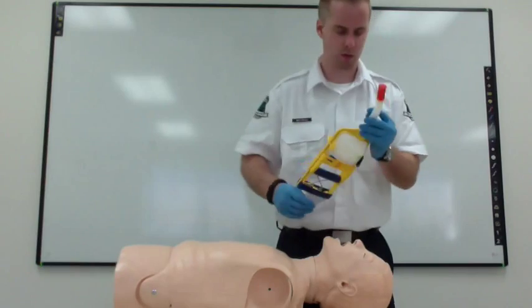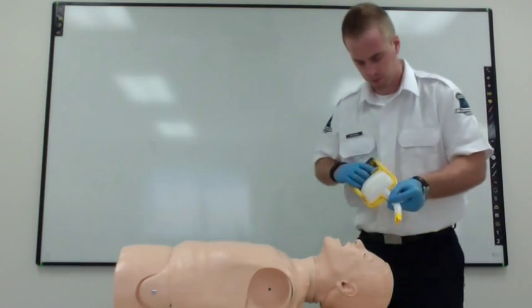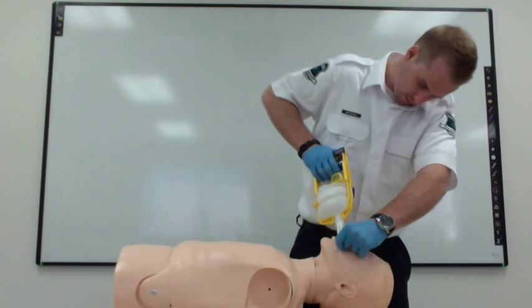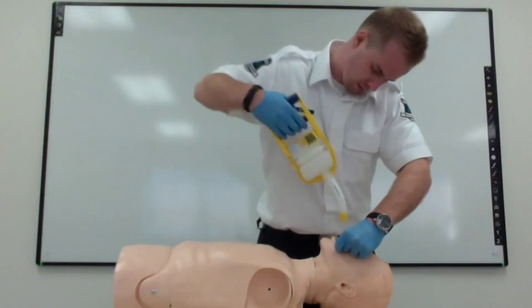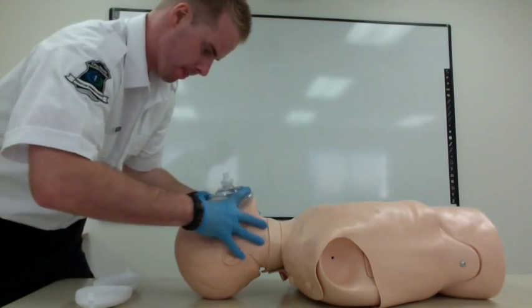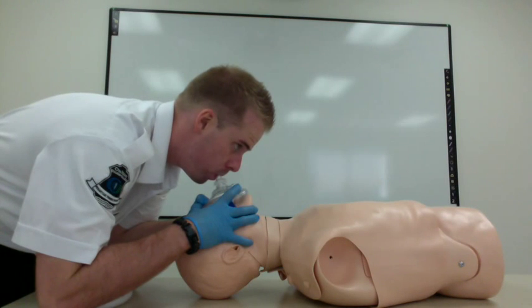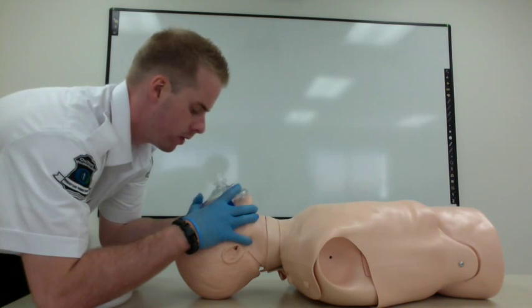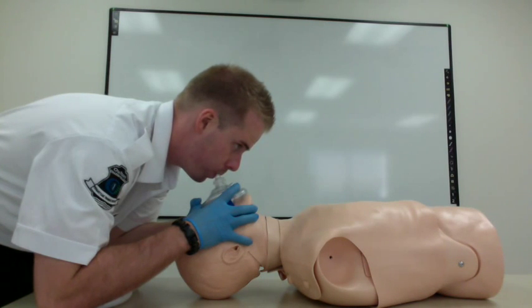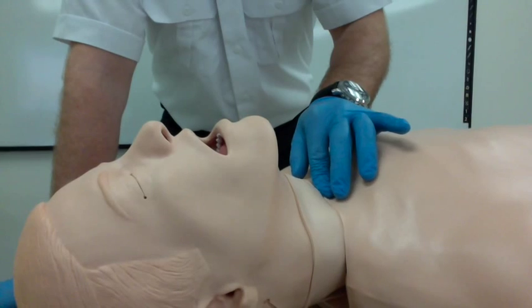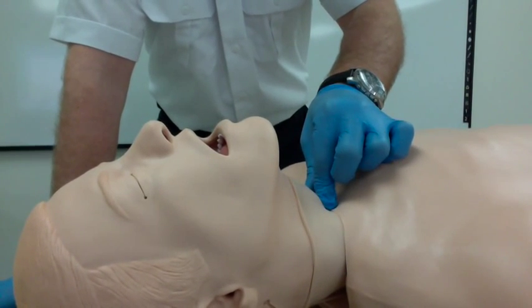Measure the tip of the device from the corner of the mouth to the tragus. Then, using a cross-finger technique, open the patient's mouth. Suction the oropharynx for 10 to 15 seconds. Using both hands, use a standard CE grip to seal the mask to the patient's face. Deliver a ventilation over one second. For rescue breathing, repeat this process once every five seconds.